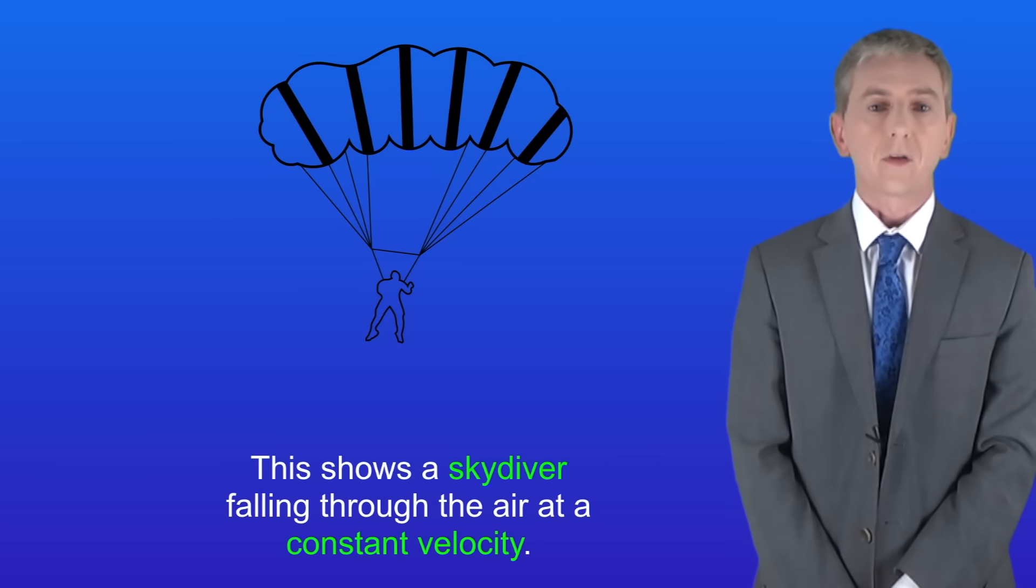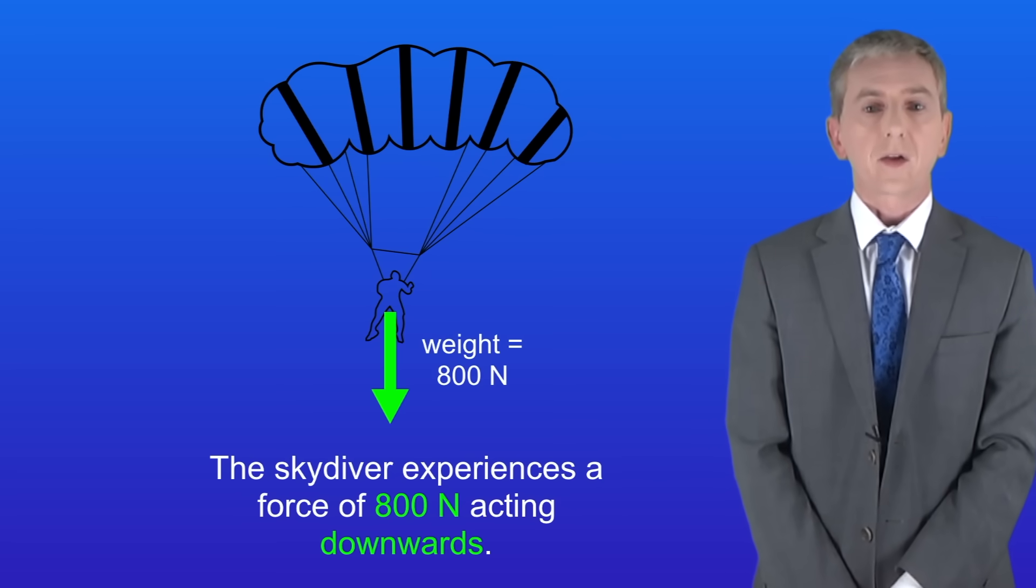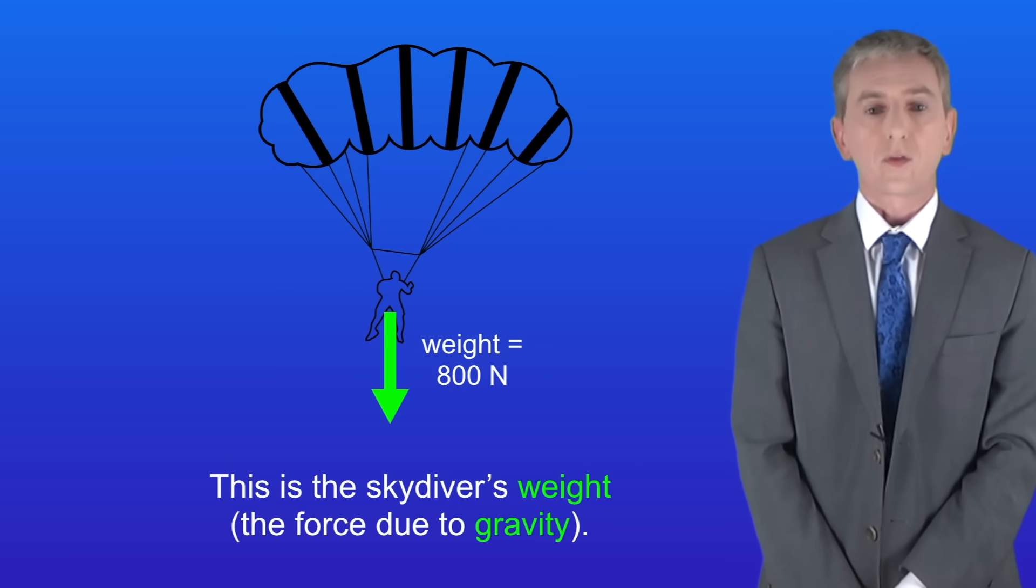Okay, this shows a skydiver falling through the air at a constant velocity. The skydiver experiences a force of 800 newtons acting downwards. This is the skydiver's weight, in other words the force due to gravity.